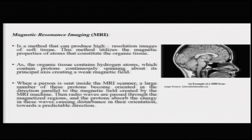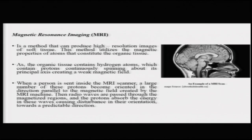We can now talk about magnetic resonance imaging. MRI is a method that can produce high resolution images of soft tissue of the brain. This method utilizes the magnetic properties of atoms that constitute the organic tissue making up the brain. The organic tissue contains hydrogen atoms with protons that continuously spin around their principal axis, creating a weak magnetic field. When a person is placed inside the MRI scanner, these protons become oriented parallel to the magnetic field created by the MRI machine, which can have a magnetic power of 0.5, 1, or 1.5 Tesla.